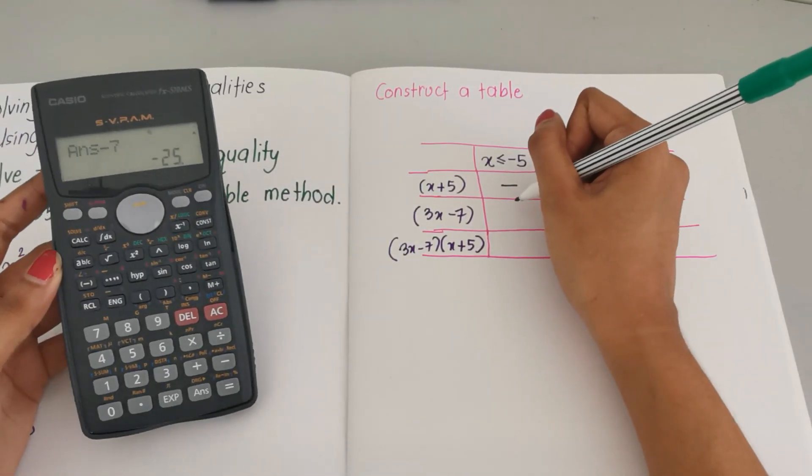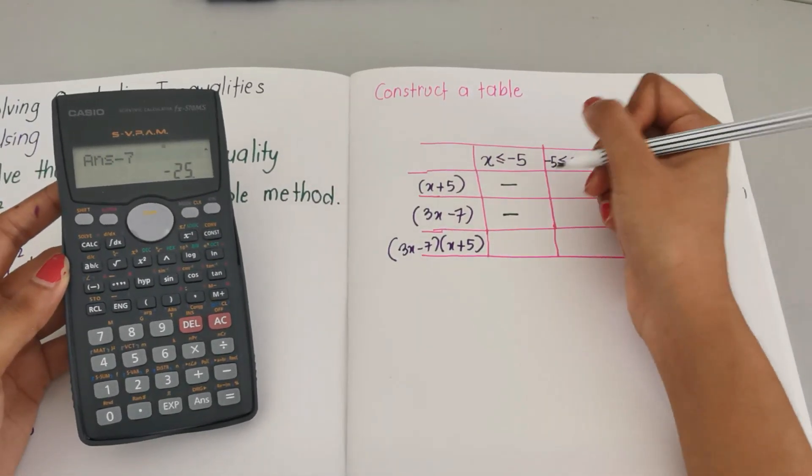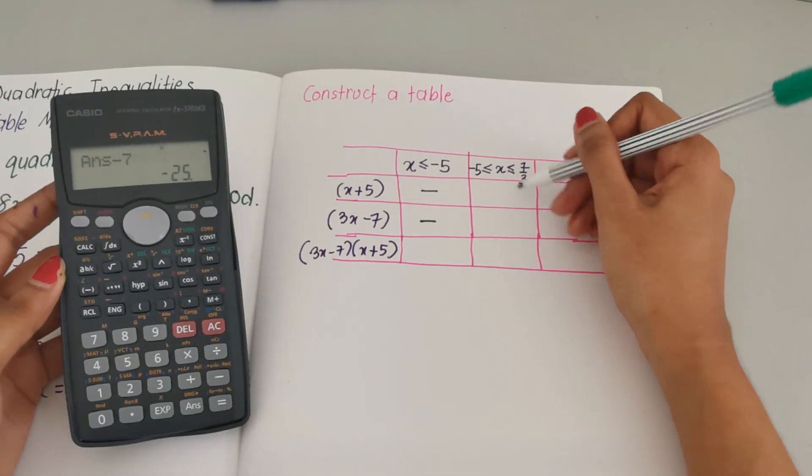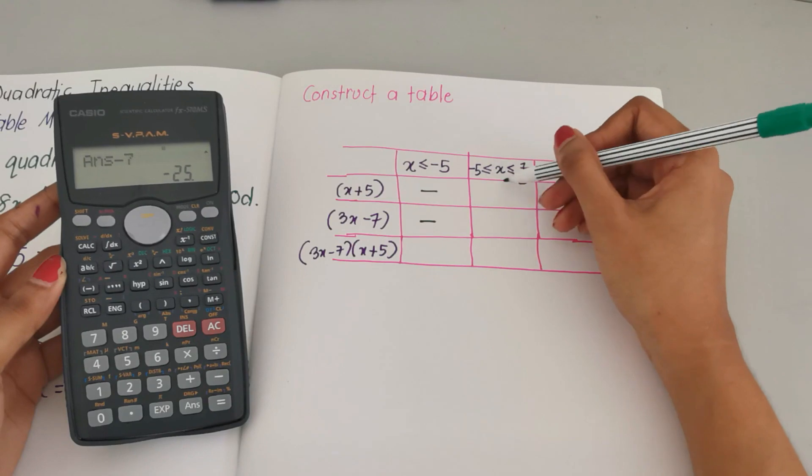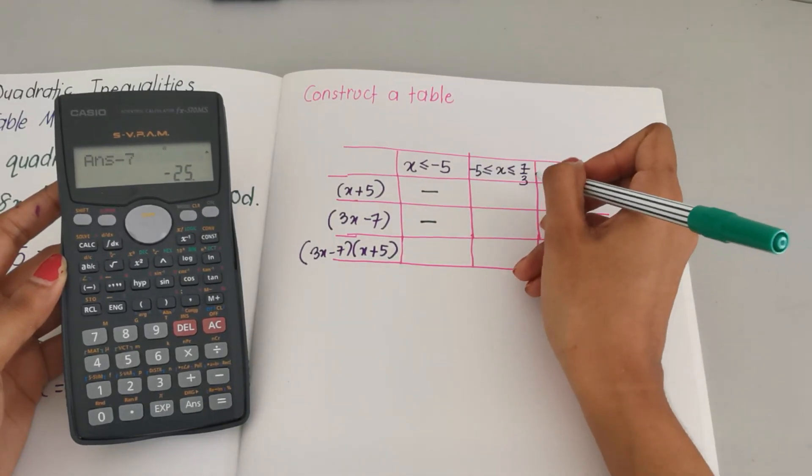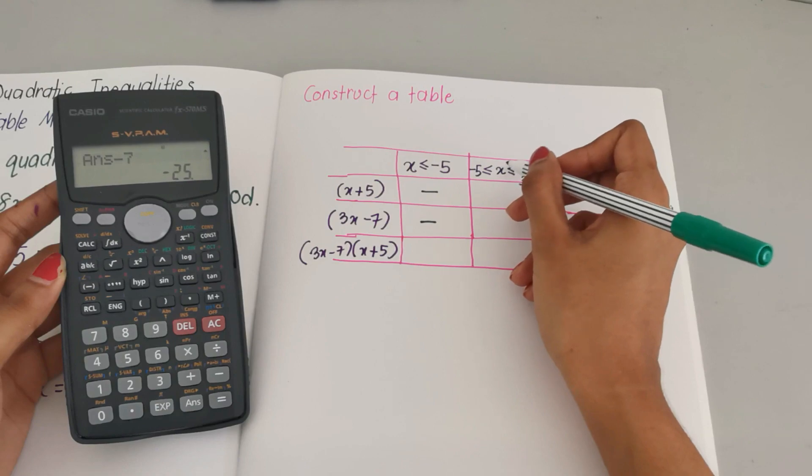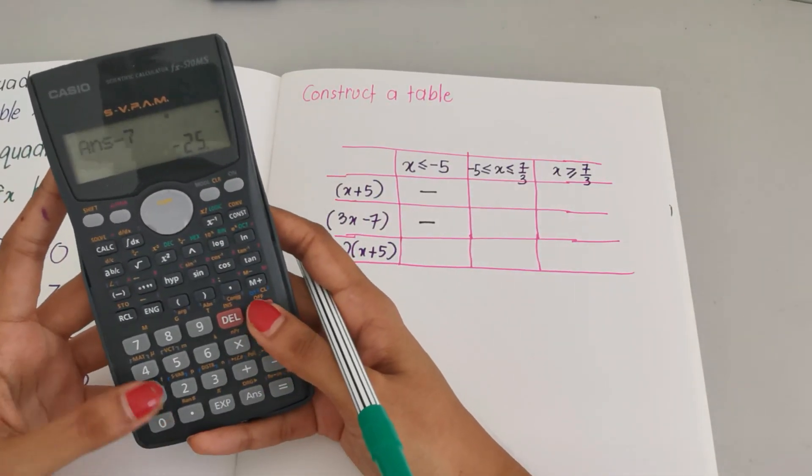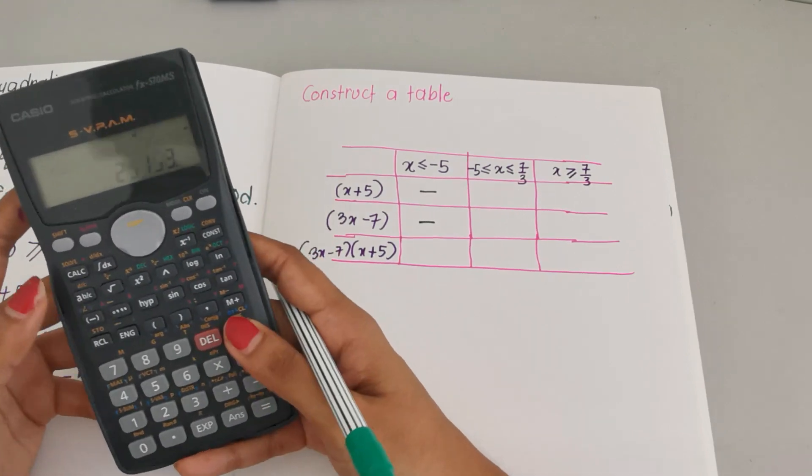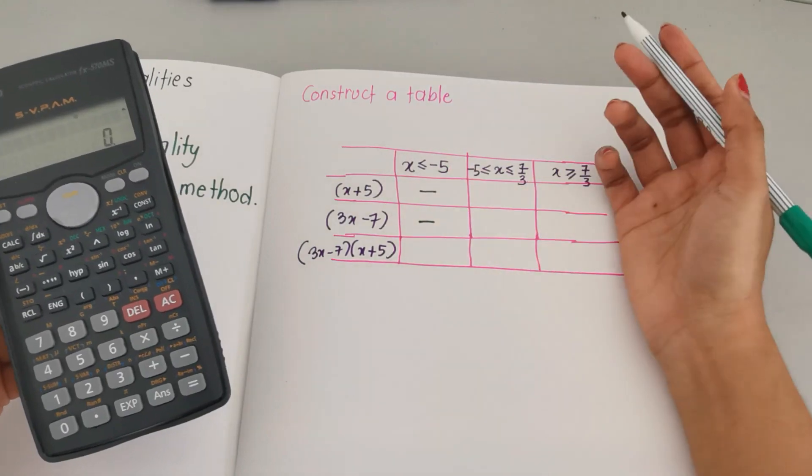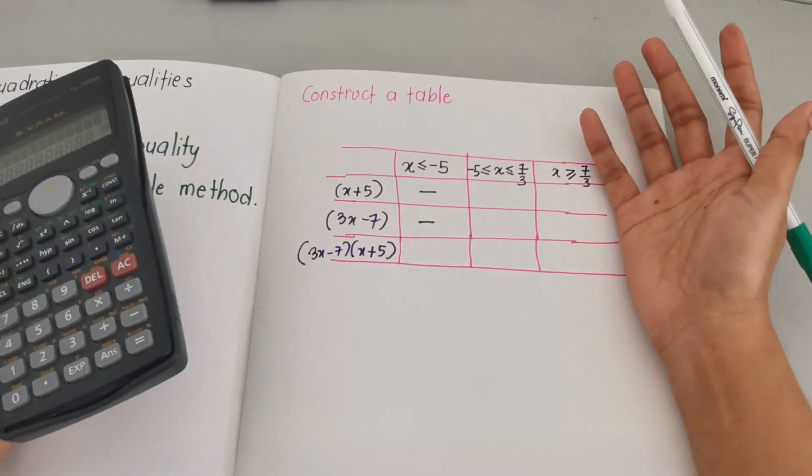Now let's go here. Choose a number that is between negative 5 and 7 over 3. Let's say we choose zero. Zero would be easy for us to put in the value, so zero plus 5 we get 5, so 5 is a positive.